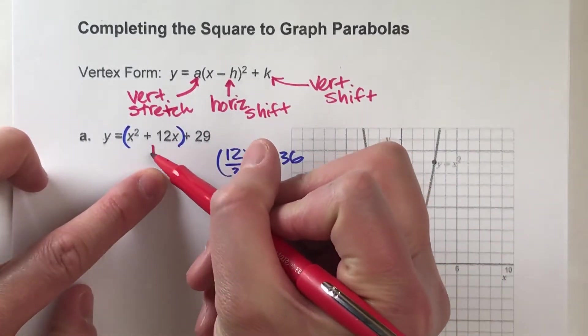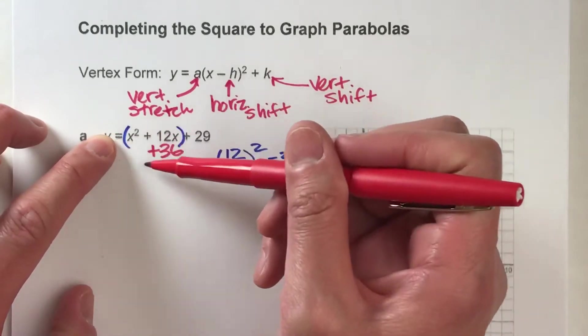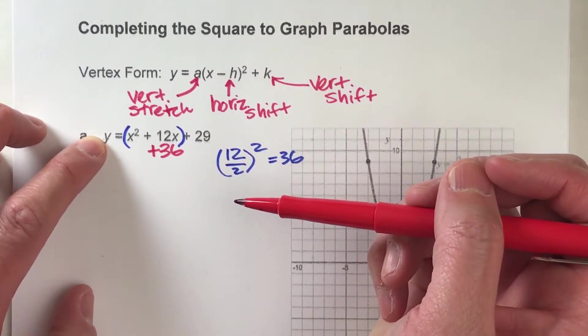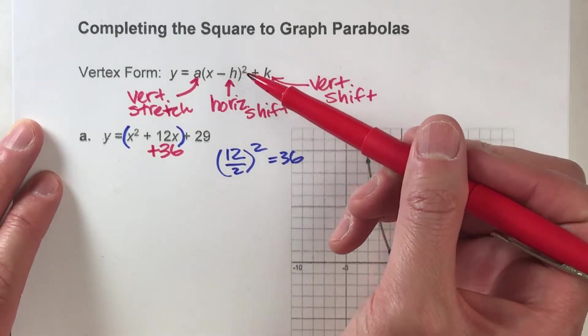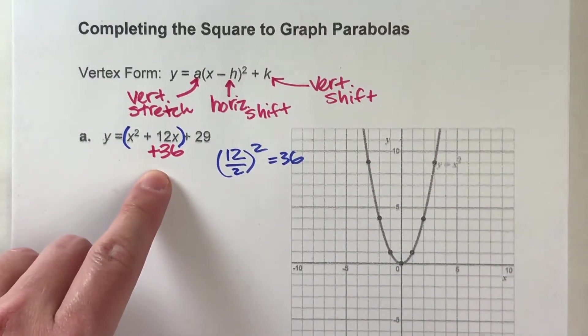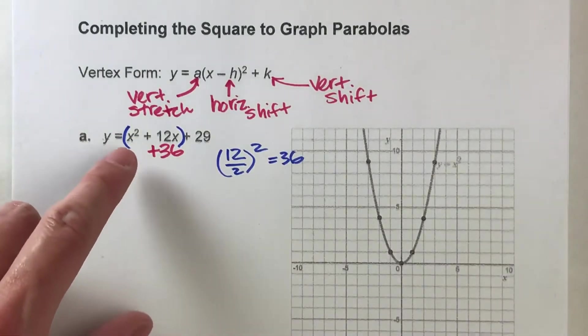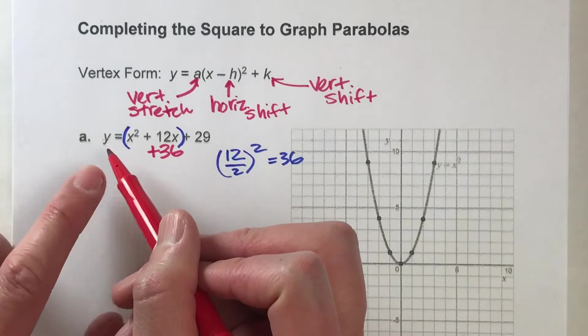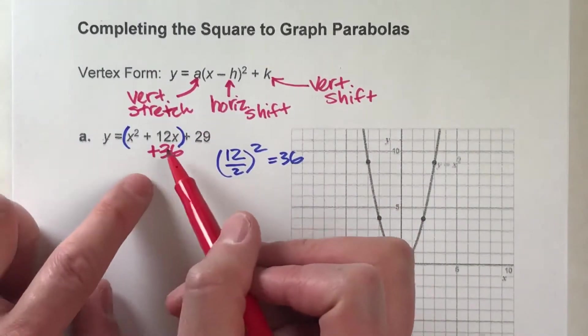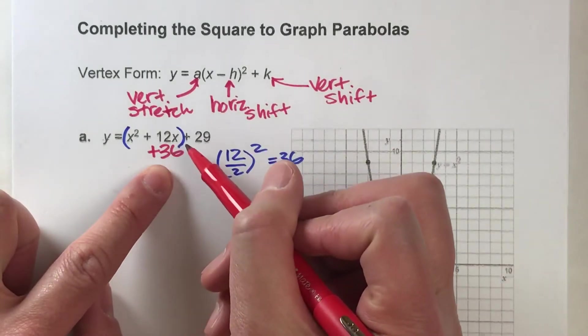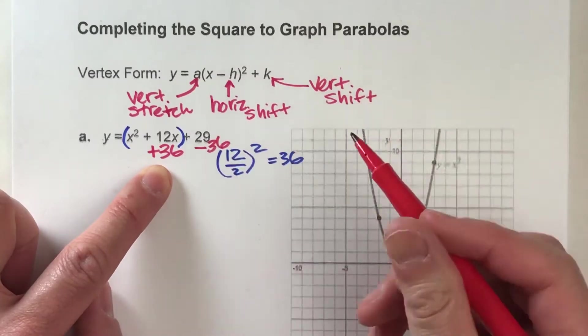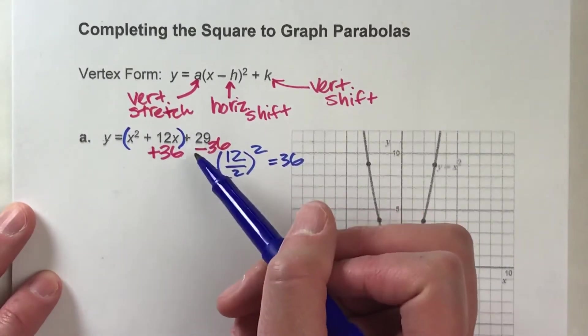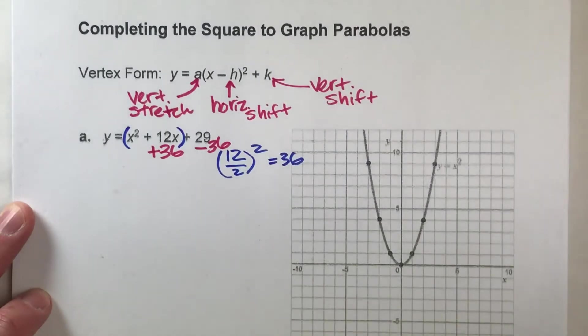So what that tells us is, if we add 36 inside of this parentheses, this little expression here, x squared plus 12x plus 36, will become a perfect square, which is what we want. But here's the problem. You can't just add 36 to an equation, because then it'll be unbalanced. If you add 36 to this side, you have to add 36 to the other side to keep things balanced. But we don't want to add anything to this side, because we want it to be y equals. So instead of adding 36 to both sides of the equation, what we're going to do is, if we add 36 to the right side to keep it balanced, I'm also going to subtract 36 to this side of the equation. And by doing that, by adding 36 and subtracting 36 on the same side of the equation, we're basically adding nothing, adding zero.